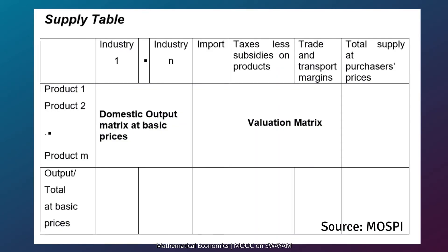This is the format of the supply table. In this table, row entries show the product produced and column entries show the value of the product by kind of supplier, distinguishing domestic supply from foreign supply, i.e. imports.